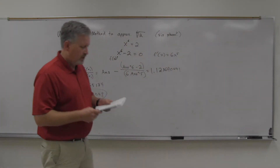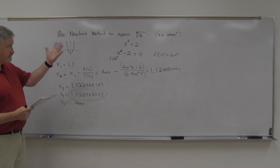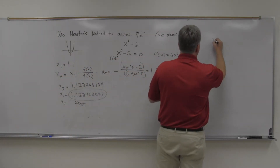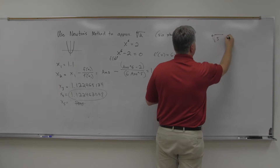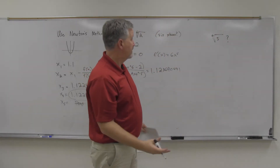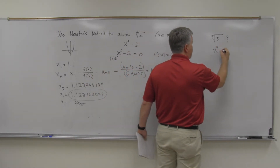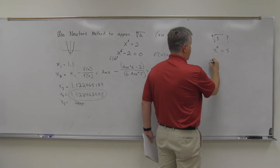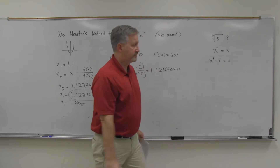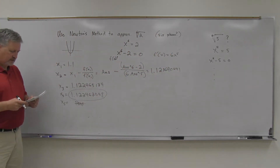Now for another one in the homework: say I want to find the fourth root of five. Same approach — what equation would that be? It's a fourth root, so I'm talking about x to the fourth equals five, which gives f(x) = x⁴ minus 5 equals zero, and then proceed similarly.